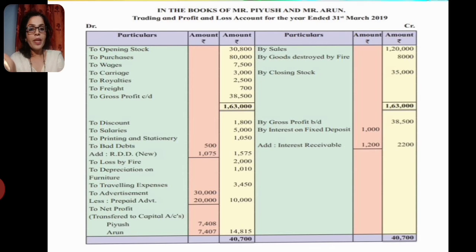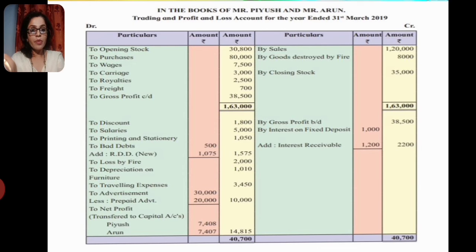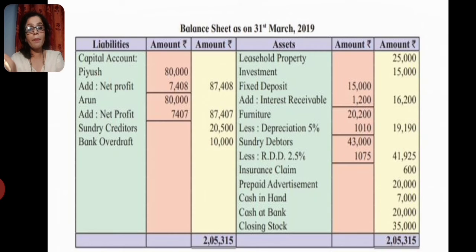Regarding the advertisement adjustment: we have paid 30,000 rupees for advertisement for three years. But the first year's portion has already been used. We have prepaid advertisement of extra 20,000 rupees. So we record prepaid advertisement as an asset on the balance sheet.